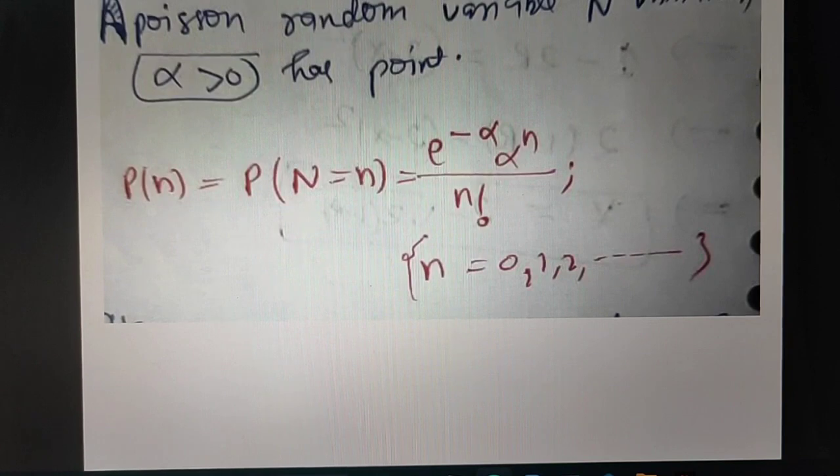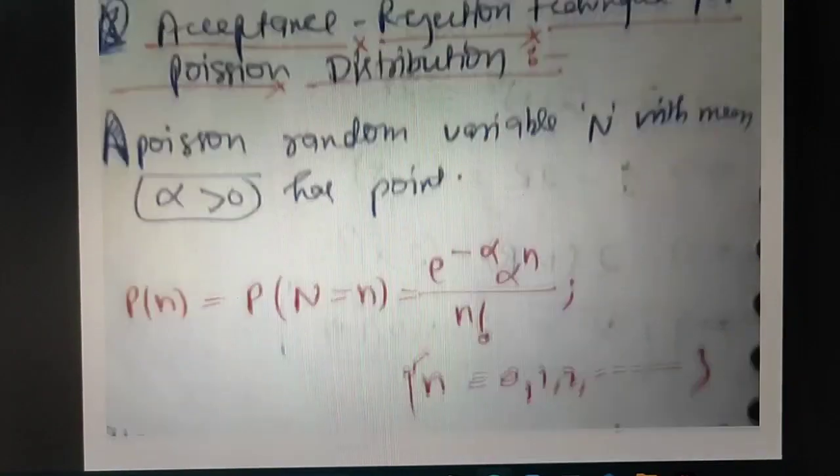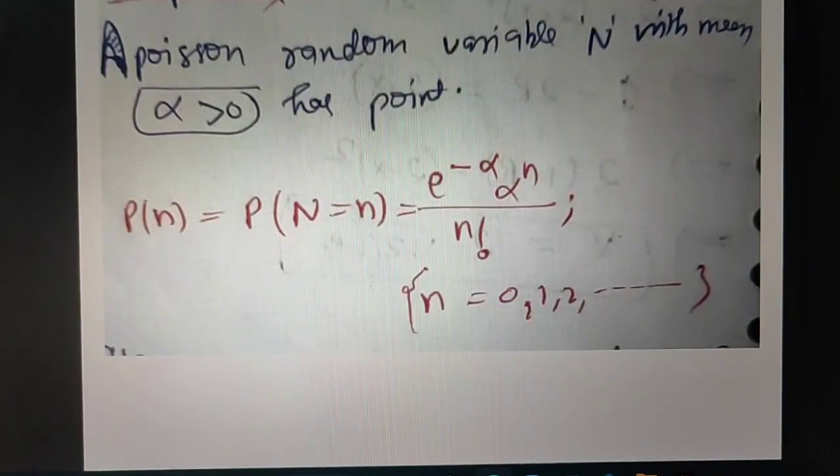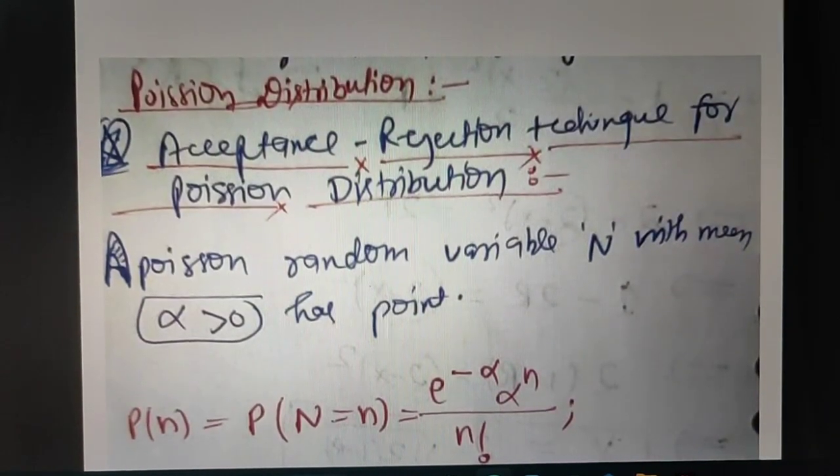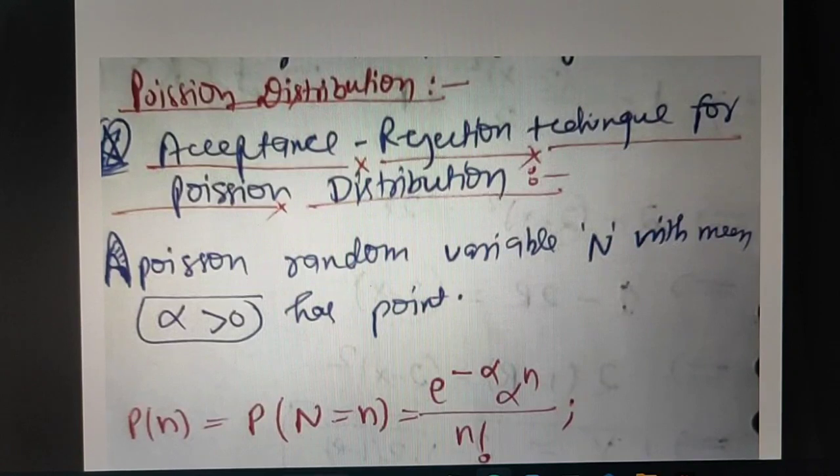I will discuss how we can implement this Poisson distribution in our acceptance resistance technique so that we can examine if some of our data is following Poisson distribution or not.